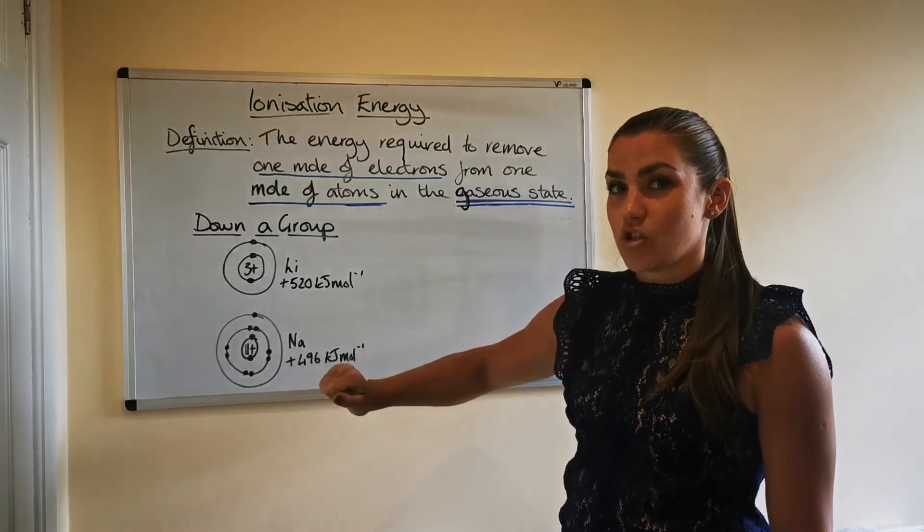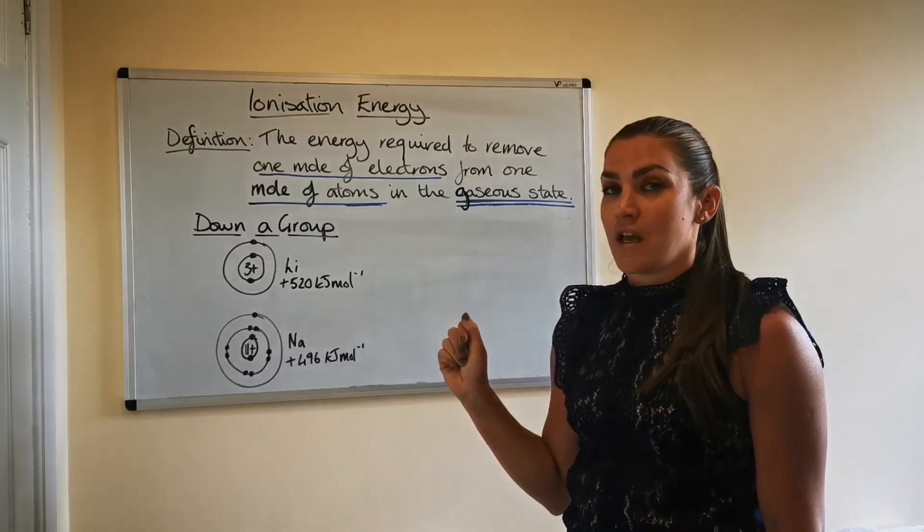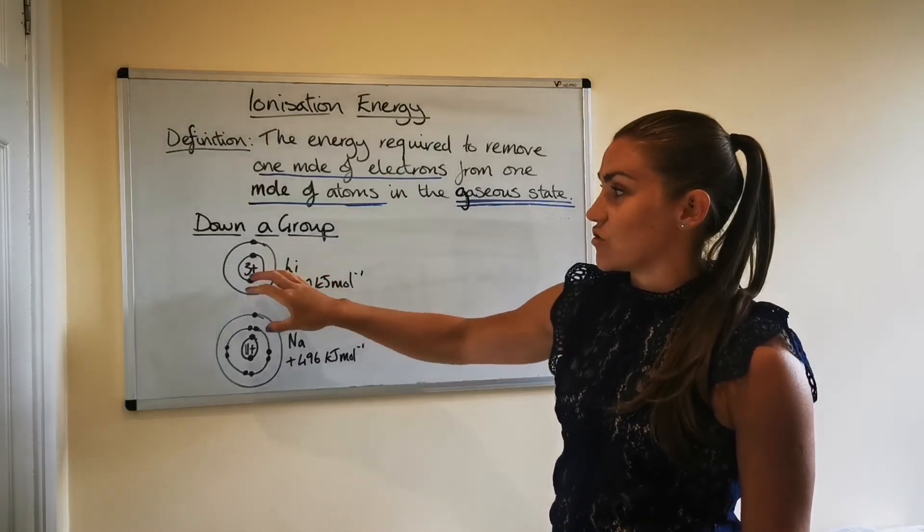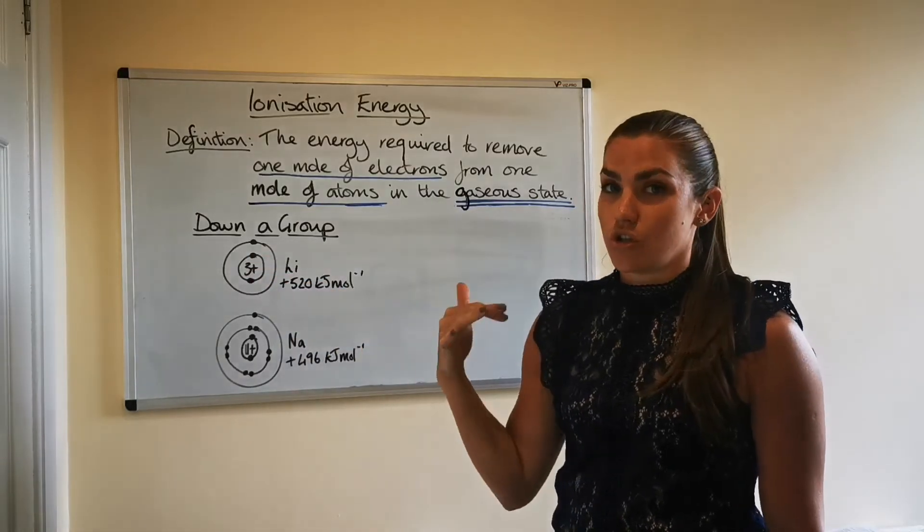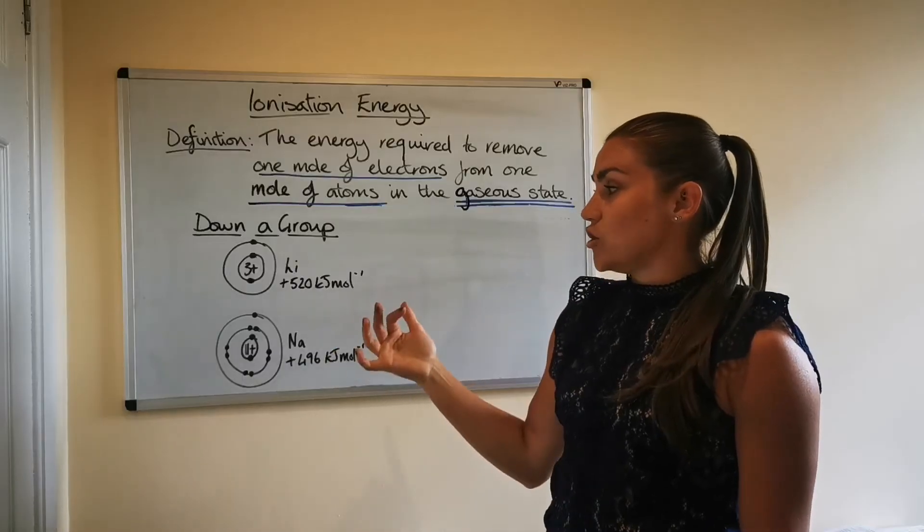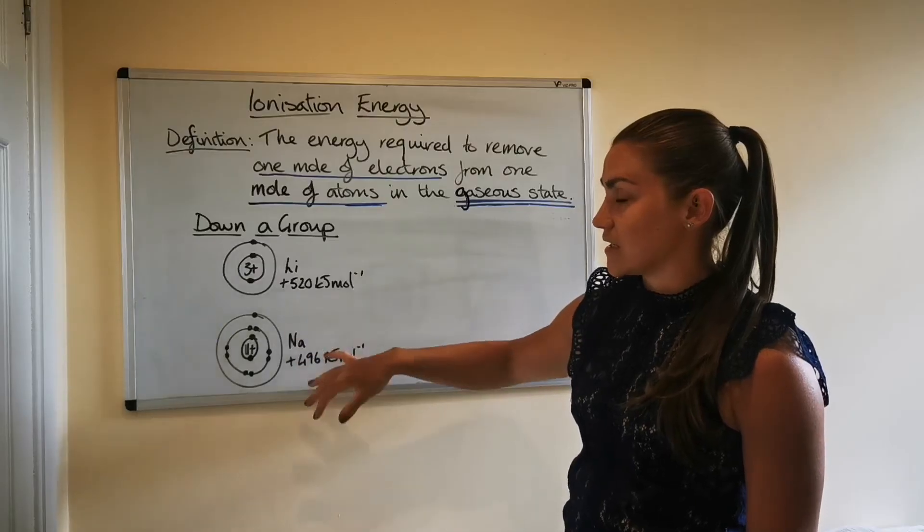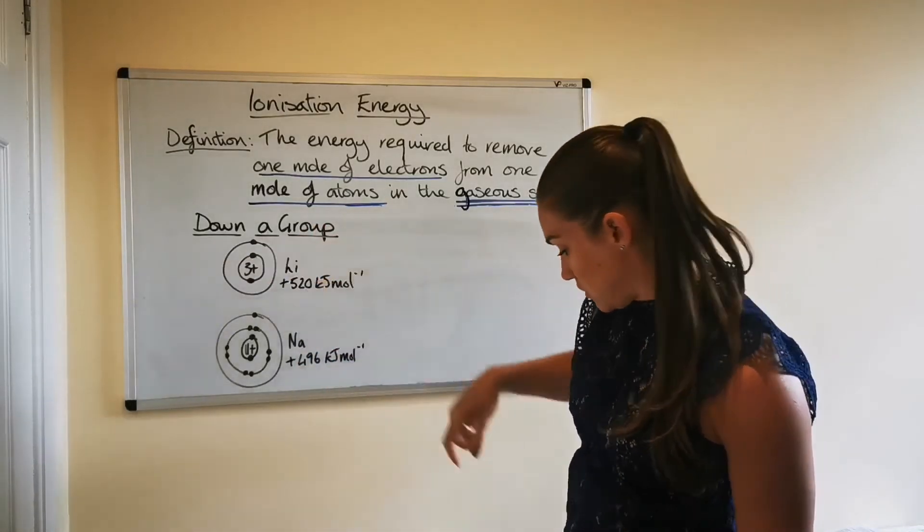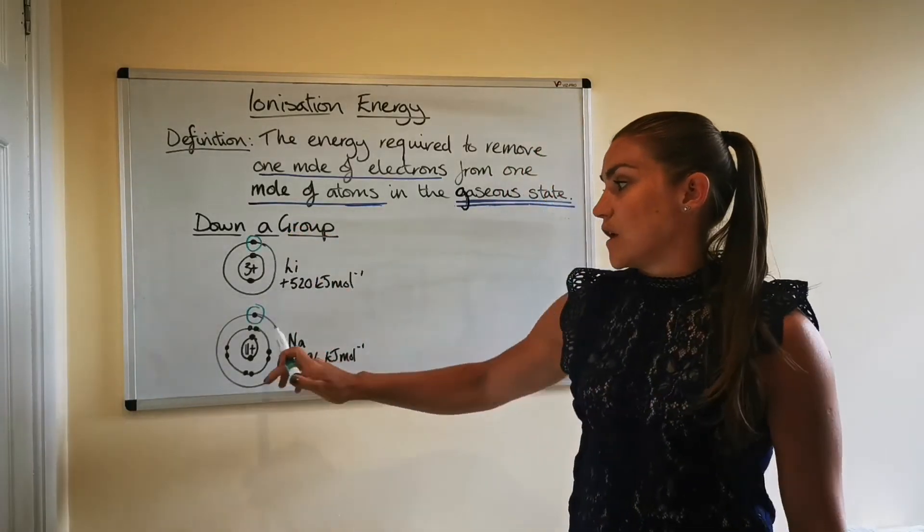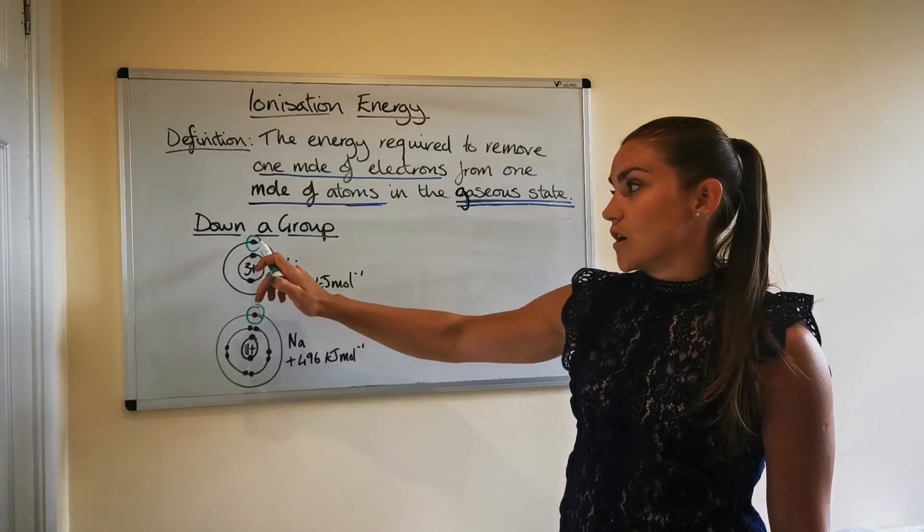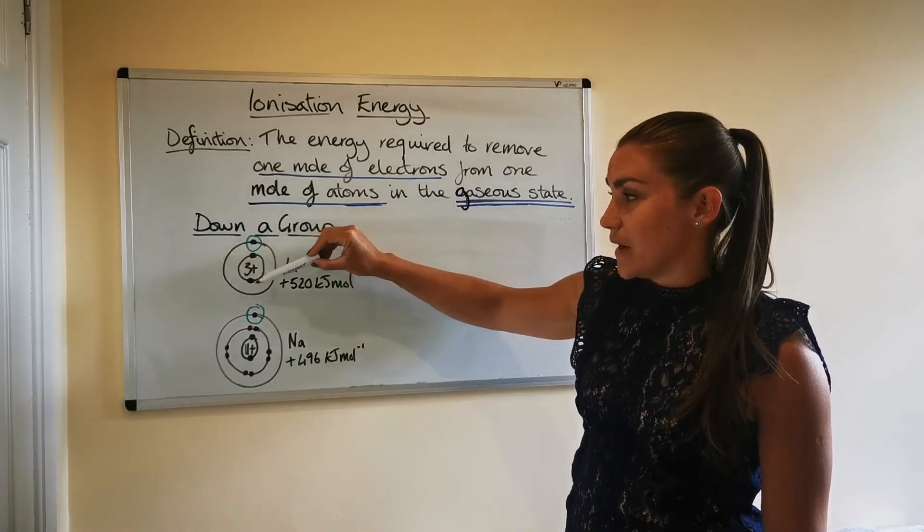Well, this is where we're going to talk about something called shielding. So shielding is an effect that happens by inner electrons, so electrons that are in the inner shells, and they shield the nuclear charge from the outer electrons. So when you are carrying out the first ionization energy of these atoms, you're removing the outer electrons. So these ones here, these are the ones being removed.